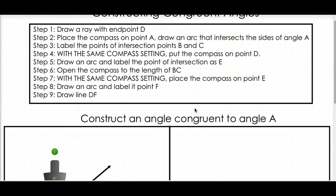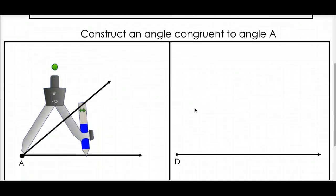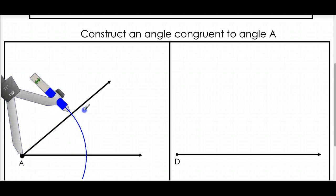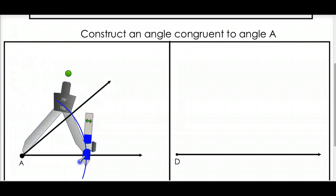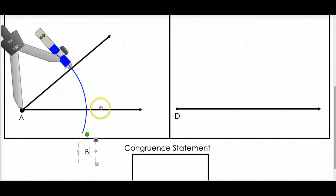The second step is to place the compass on point A and draw an arc that intersects the sides of angle A. So, check this out. We're going to take our compass, place it on A, like so, and then we're going to draw this line, this arc, and it's going to intersect the two sides. See what I'm doing there? We're going to label these points of intersection B and C. So, let's put a B. You write this in. We're going to put a B right here. This is B. And this is C. Call them whatever you want. Those are just B and C for now.